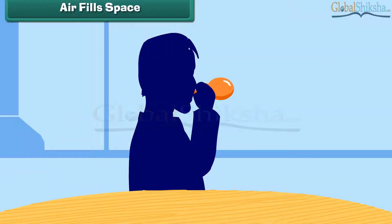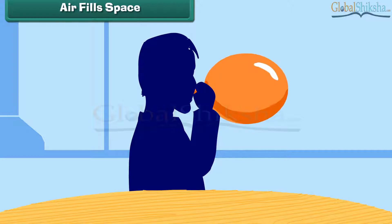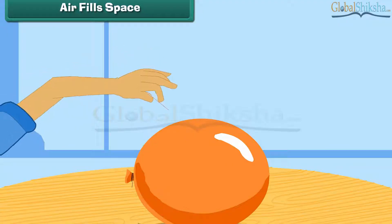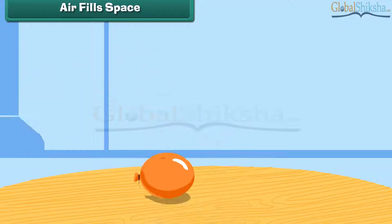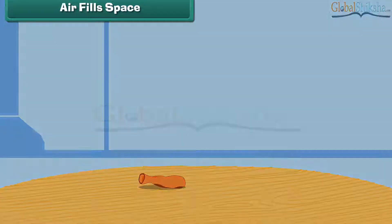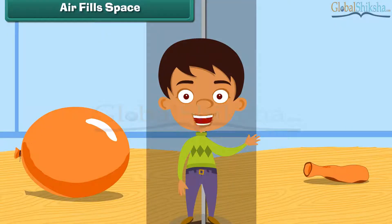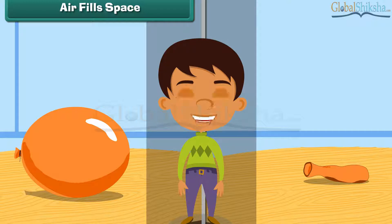Air fills space. Take a balloon and blow air into it — the balloon expands in size. Now prick the balloon with a pin. What do you see? The air inside the balloon escapes through the hole and the balloon becomes flat. This proves that air fills space.